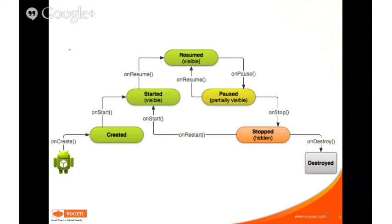Then onStart gets fired as we move up the tree. Once your application is done with the onStart function, it's going to be visible to the user. The onStart method is for activities that need to be done by the time the application is actually visible — for instance, loading data from a database on the device, loading static resources like images, or doing default manipulations.